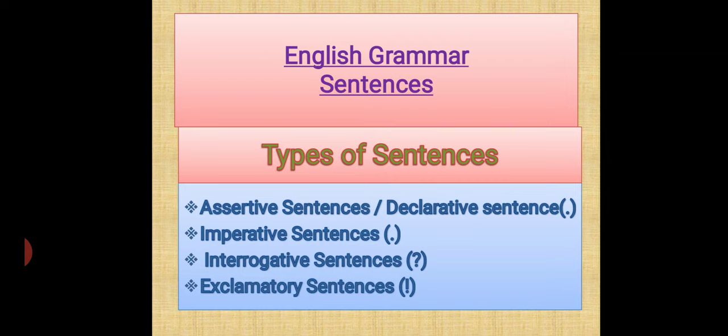Next, come to the interrogative sentences. Interrogative sentences start with a capital letter and end with a question mark. In this type of sentence, we want to know something where that thing is unknown to you. Whenever there is an unknown thing that you want to know, that type of sentence becomes your interrogative sentence.